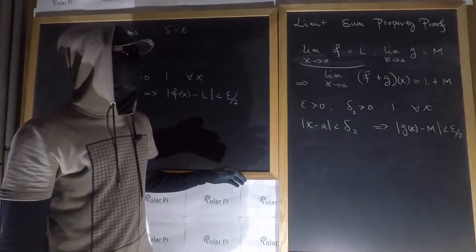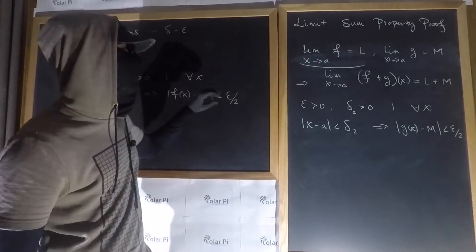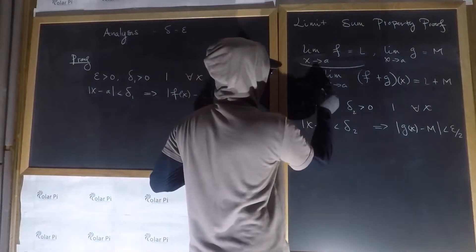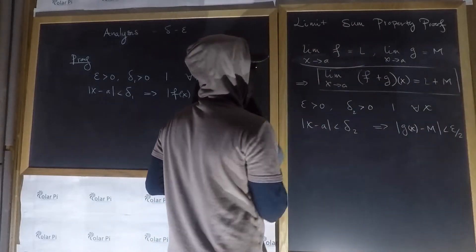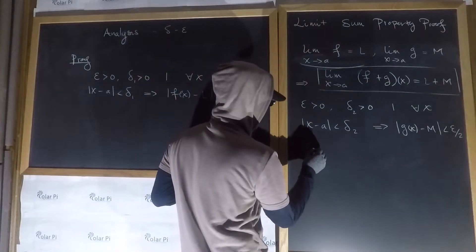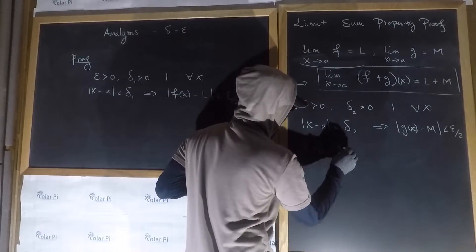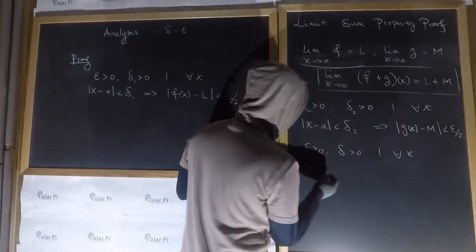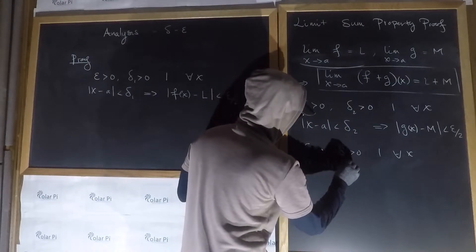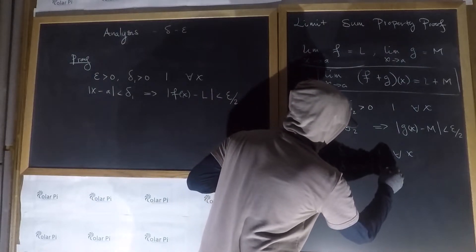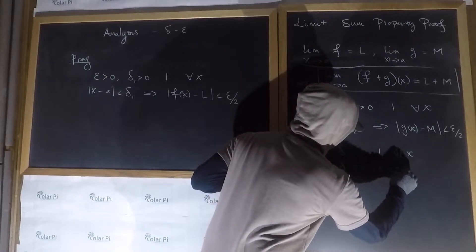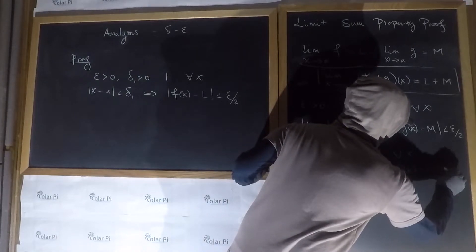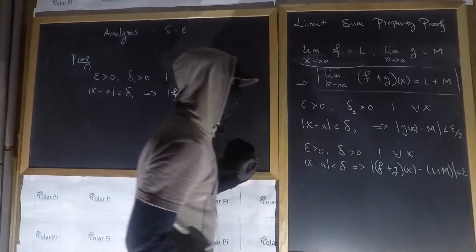Notice that ultimately, starting from both of those statements, where we want to get to is this: for every epsilon greater than zero, there's a delta greater than zero such that for all x, whenever |x - a| < δ, it immediately follows that |f(x) + g(x) - (L + M)| < ε. This is where we want to get to.